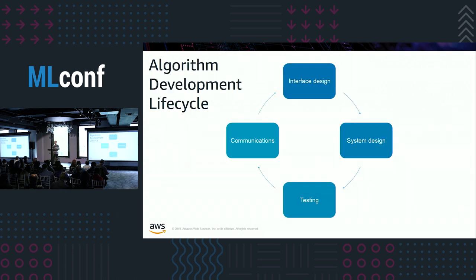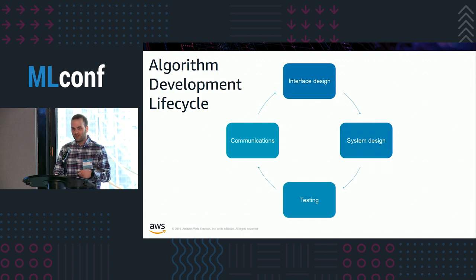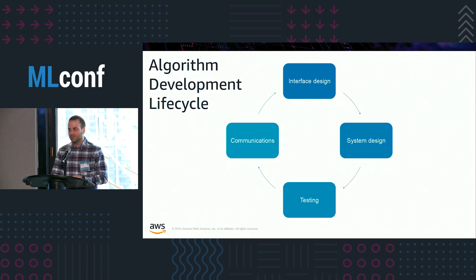Once you have an algorithm in mind, there's a life cycle to it, very similar to the software development life cycle. You have the interface — how you expect the user to interact with your algorithm. The system — what systems you're going to use to implement that interface and how you navigate the trade-offs. Then testing — once you've chosen a system, how do you test it to make sure it performs as expected. And then communications — how you document your software and make it easier to use.